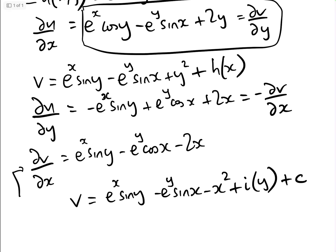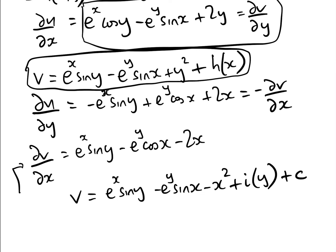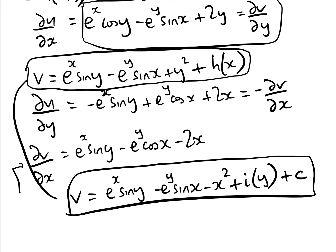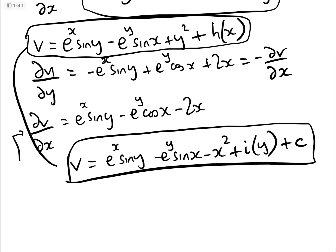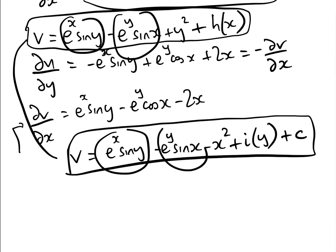Now we compare the two expressions for v, exactly as we did in those previous videos. We see that e to the x sin y and minus e to the y sin x are the same in both. We can identify that i(y) equals y squared and h(x) equals minus x squared.